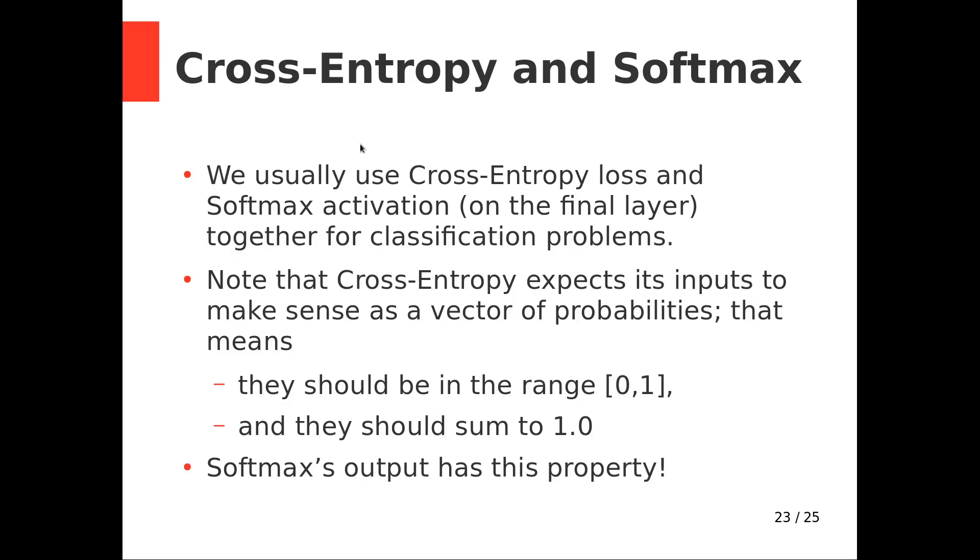So the take-home from this is that we usually use cross-entropy loss and softmax activation for the final layer with classification problems. Notice that they pair fairly well. So cross-entropy expects its input to make sense as a vector of probabilities. It expects its inputs to be in the range 0 to 1 and to sum to 1. Softmax's output has exactly this property.